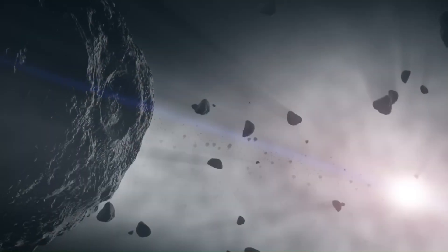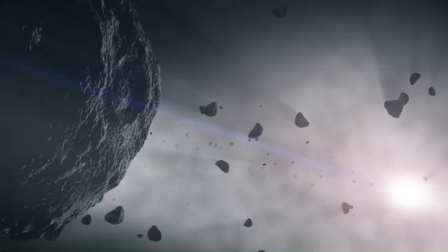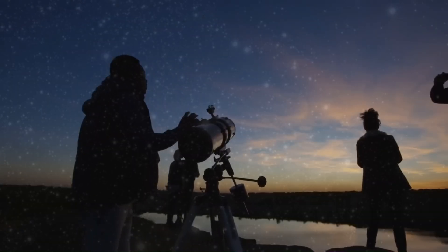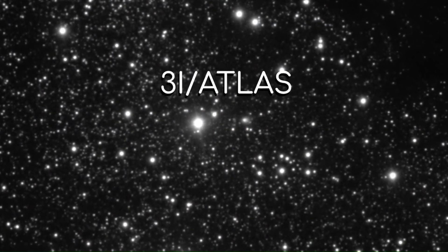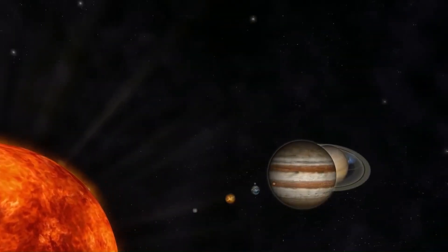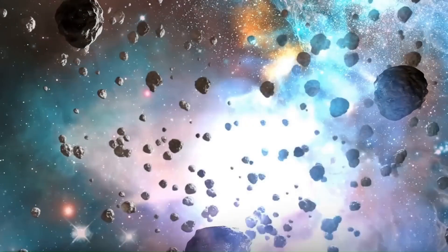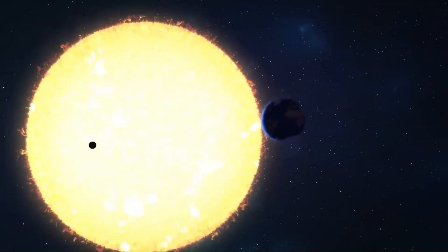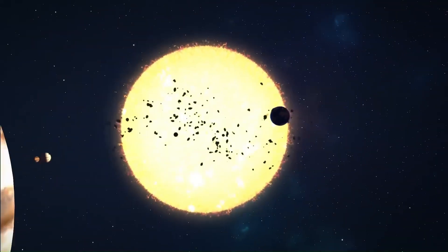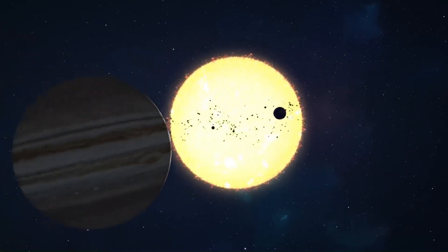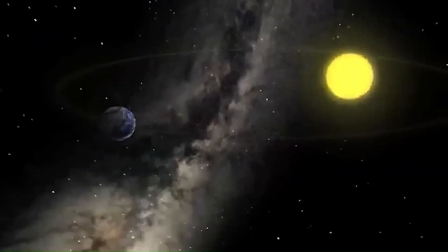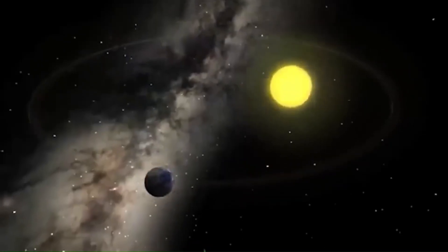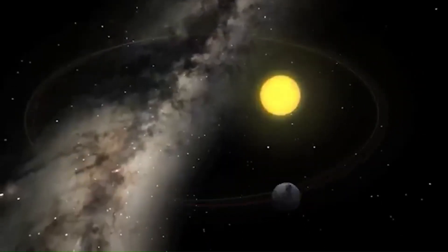In late October 2025, a rare astronomical moment will unfold. On the 29th, an object called 3I Atlas will swing past the Sun at its closest approach, known as perihelion. What makes this moment so unusual is that the Sun, Earth, and 3I Atlas will line up perfectly in a straight line. That alignment means the Sun will block our view just when scientists are most eager to study it.